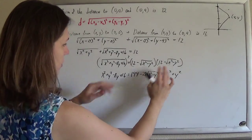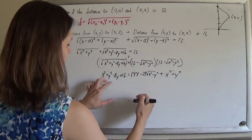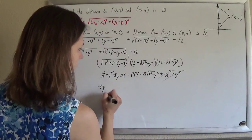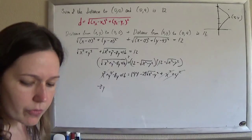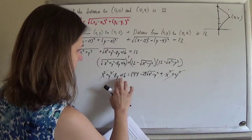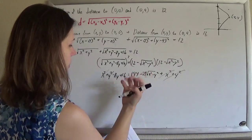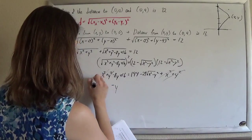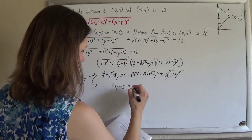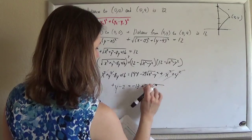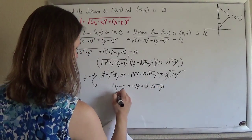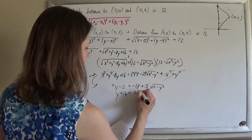I'm going to get that remaining square root alone by canceling terms. Subtracting x² from both sides — they go away. Subtracting y² from both sides — they go away. Then I have −8y and 16 − 144 remaining. I noticed everything is divisible by −8, so dividing everybody by −8 gives y − 2 equals — 144 divided by −8 is −18, which becomes +18, and 24 divided by 8 is 3 — so y + 16 equals 3 times the square root of x² + y².